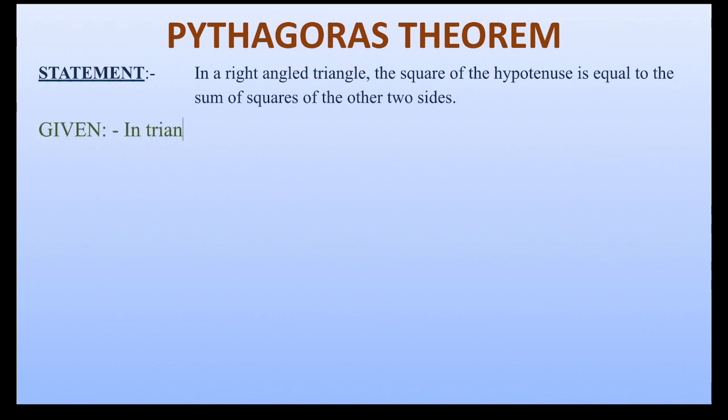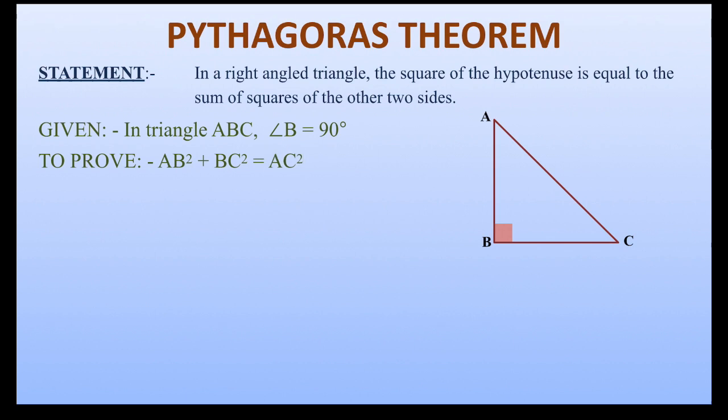So, we are given a right triangle ABC where angle B is 90 degrees. We need to prove that AB² + BC² = AC².